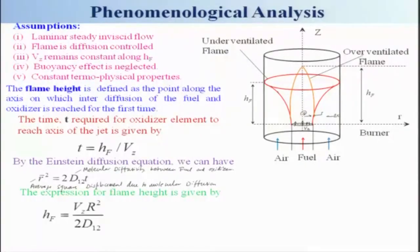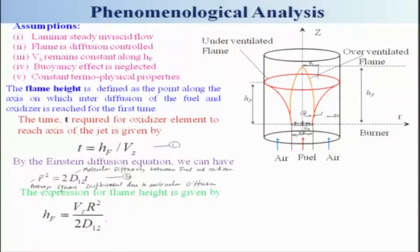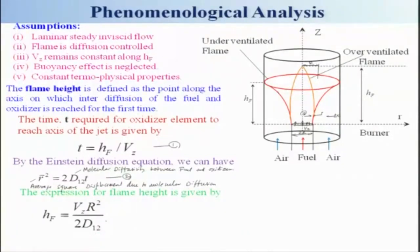Combining these two equations — HF = Vz·T and T = R²/(2·D₁₂) — where the diffusion distance R' equals the tube radius R, we get: HF = Vz·R² / (2·D₁₂).